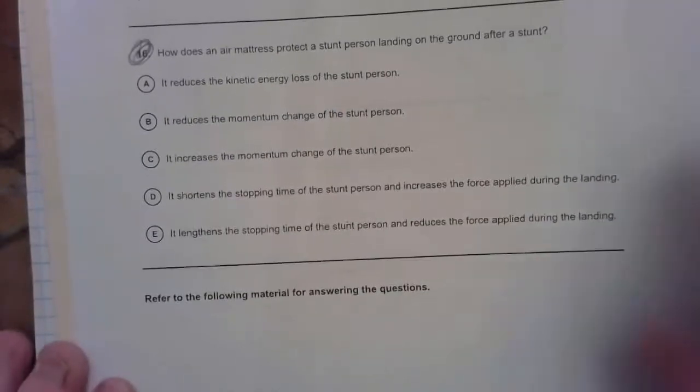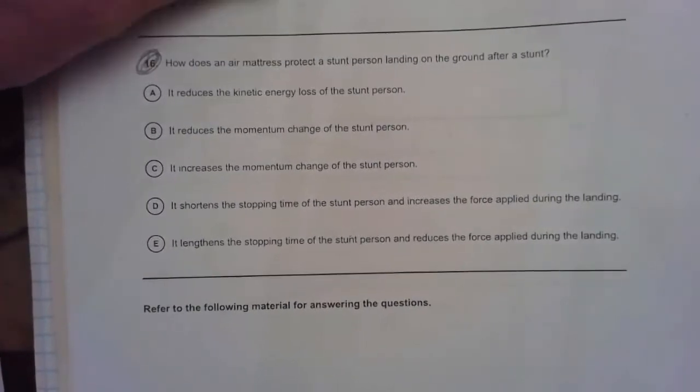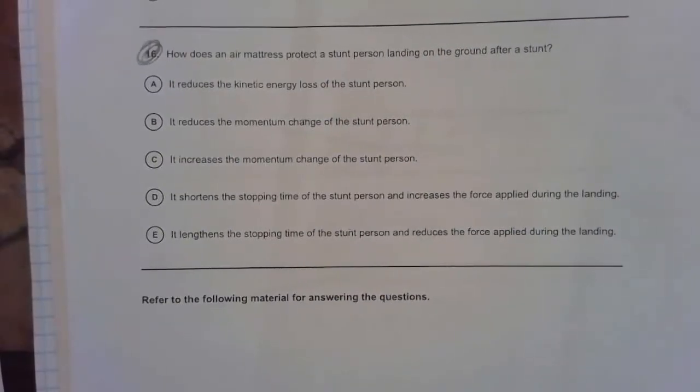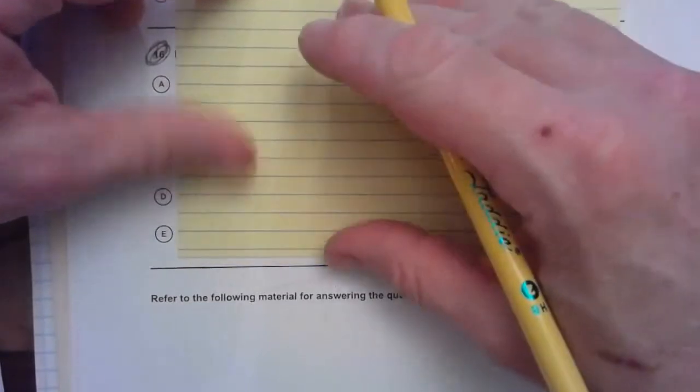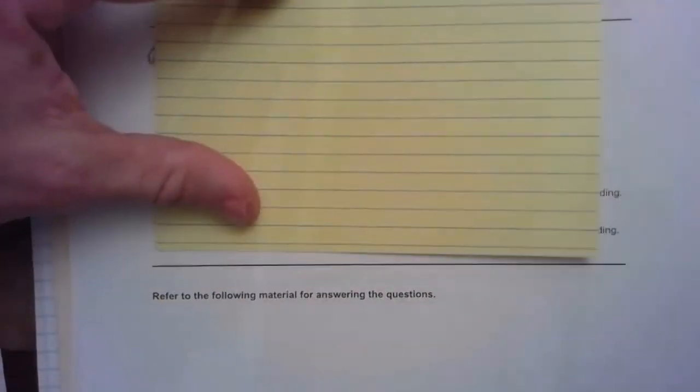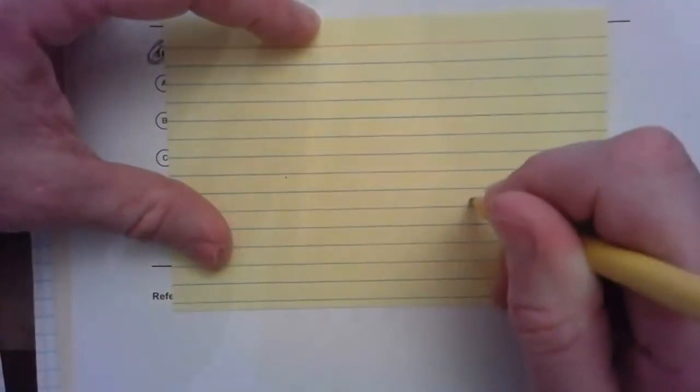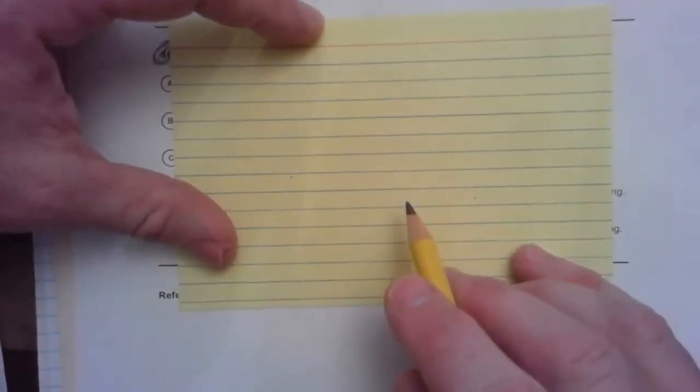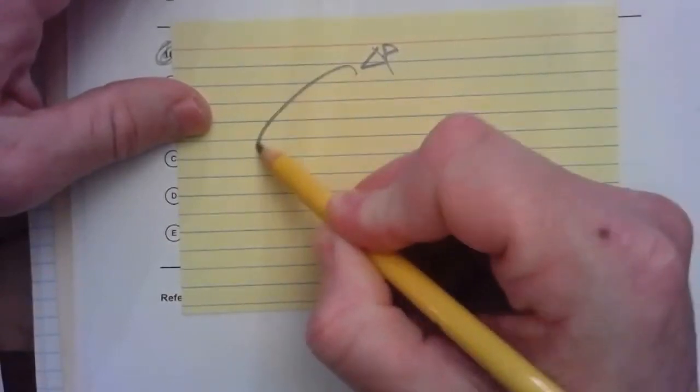Alright. Sixteen. How does a mattress protect a stunt person landing on the ground after a stunt? So, this is all about impulse. This is all about one of the more important things, as far as I'm concerned, that you understand out of this unit. And that is, that when an actor jumps out of a window and lands on the ground, whether he lands on concrete, or whether he lands on a mattress, his impulse is the same. His change in momentum is the same. Think about it. He's moving, and then he's not. Same change in impulse. But it's how that happens. So the impulse in either case, the change in momentum in other words, is the same.